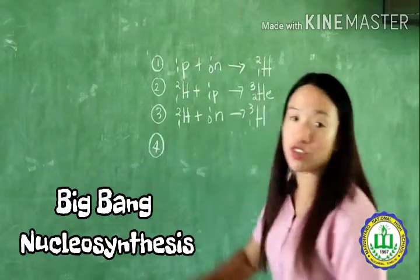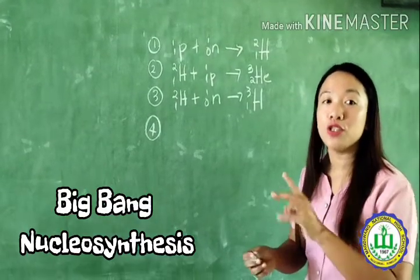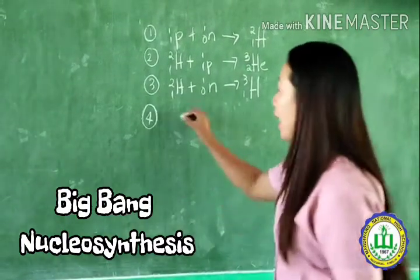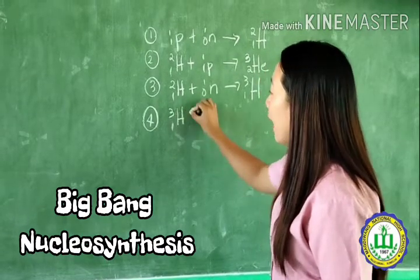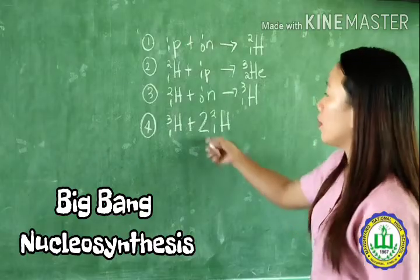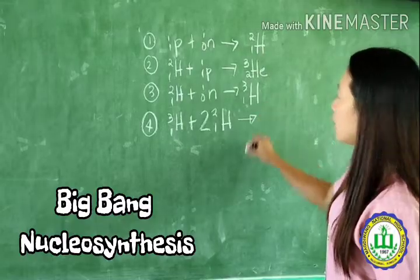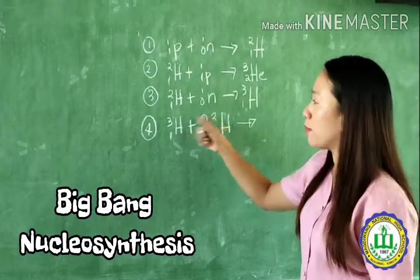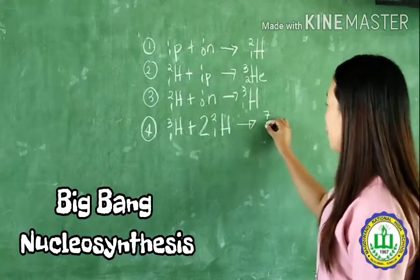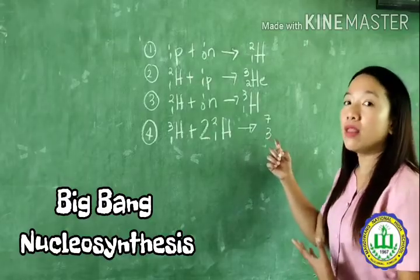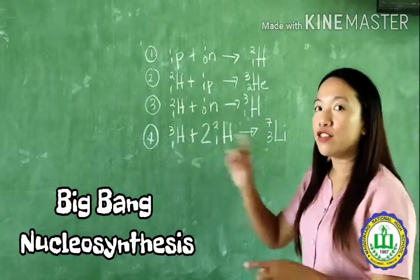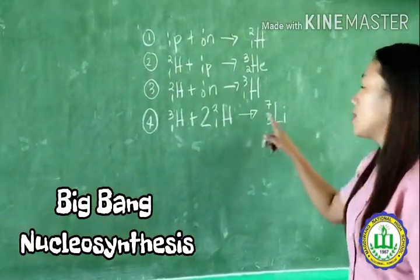Reaction four: tritium and 2 deuterium nuclei collide and form lithium-7. The atomic mass is 2×2 + 3 = 7, and the atomic number is 2×1 + 1 = 3. An element with atomic number 3 is lithium. So when tritium and 2 deuterium collide, lithium-7 is produced.